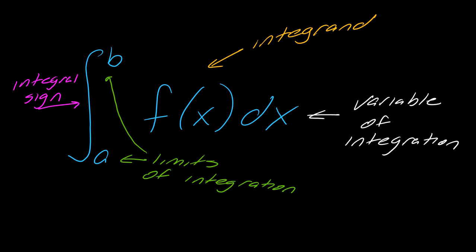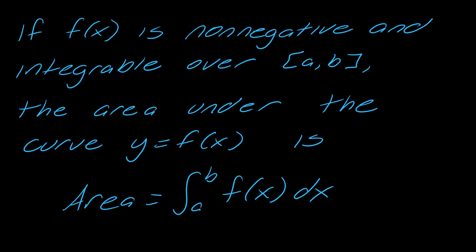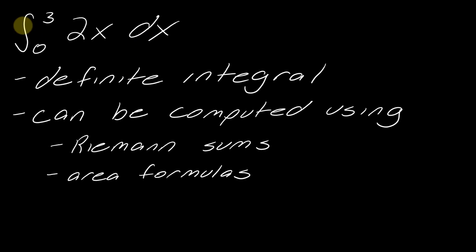Going through the notation: this s-shaped curve is the integral sign, a and b are called the limits of integration, this part is the integrand, and dx refers to our variable of integration. As part of the definition, a definite integral technically equals the limit as n goes to infinity of a Riemann sum using right endpoints. Also, if f(x) is non-negative and integrable over the closed interval, then the area under the curve is found using the definite integral. So this can be computed using either Riemann sums or area formulas.